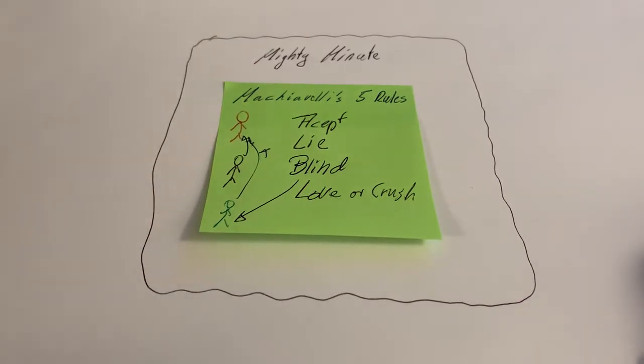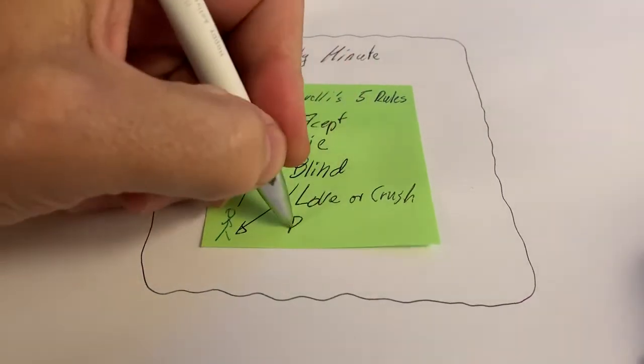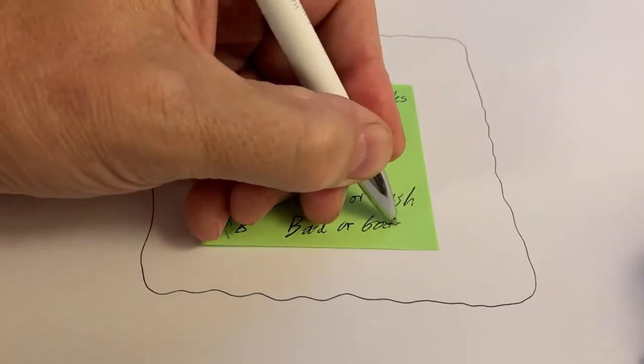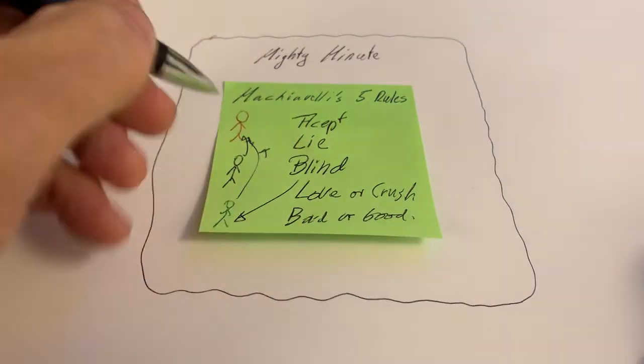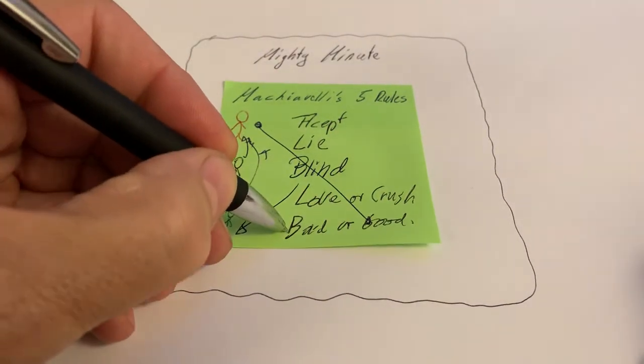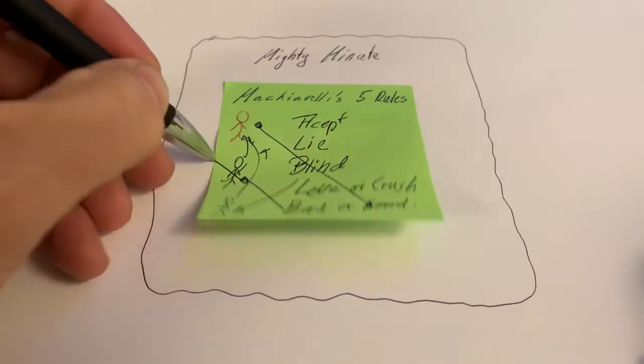And the fourth is bad or good. Now if there's a good deed you do in your decisions, you claim it for yourself. If there's a bad decision, you claim it on the helper and then you kill him.